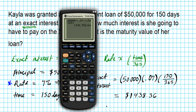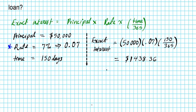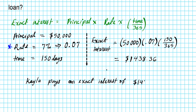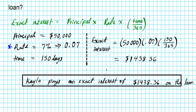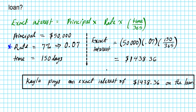Let's contextualize our answer. This means that Kayla pays an exact interest of $1,438.36 on the loan. That is the answer to the first part of the question.